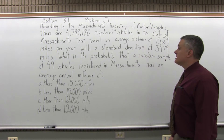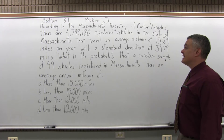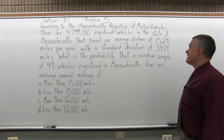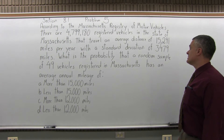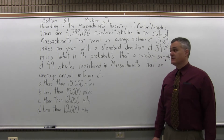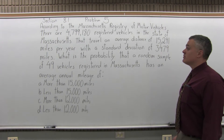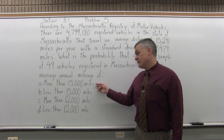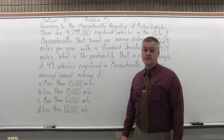According to the Massachusetts Registry of Motor Vehicles, there are 4,799,180 registered vehicles in the state of Massachusetts that travel an average distance of 15,291 miles per year with a standard deviation of 3,479 miles. What is the probability that a random sample of 49 vehicles registered in Massachusetts has an average annual mileage of more than 15,000, less than 15,000, more than 12,000, and less than 12,000?